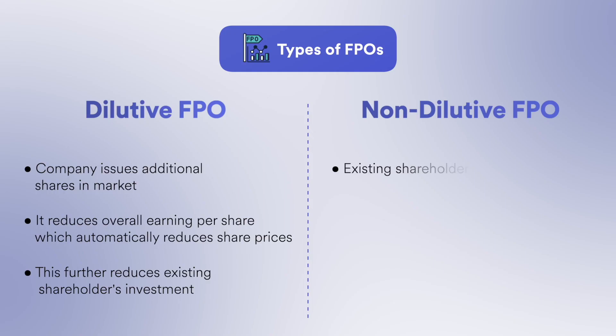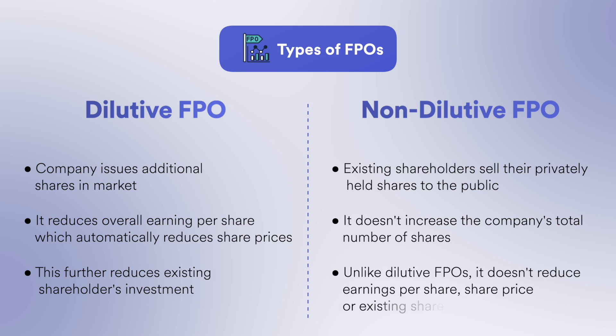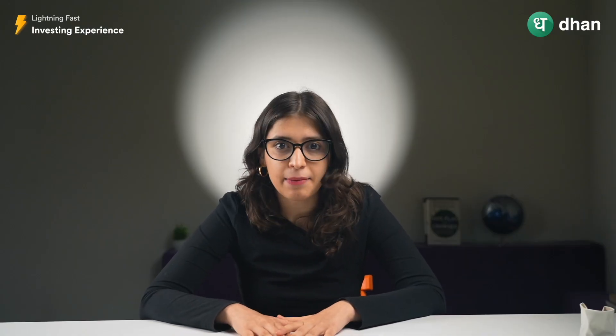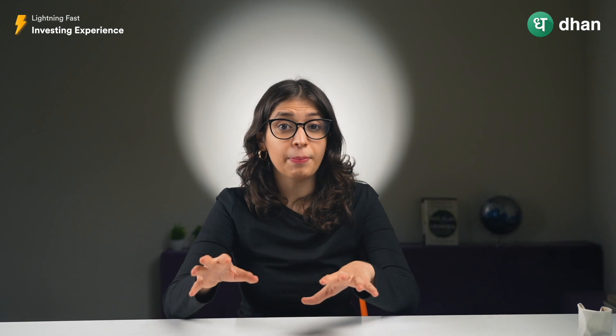Non-dilutive FPO is the case when the company's promoters, board of directors, or large investors sell their privately held shares in the market. In this case, the company's total number of shares does not increase — only the shares available to the general public increase. Unlike dilutive FPOs, the company's earnings per share, share price, and existing shareholders' investment value are not reduced. Therefore, this is called a Non-Dilutive FPO. In this case, the proceeds from the share sales go to the selling investors, not to the company, so this type of FPO does not directly benefit the company.